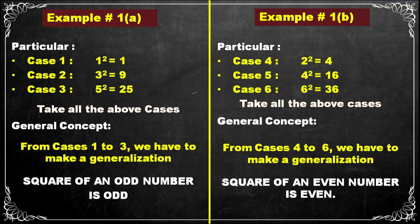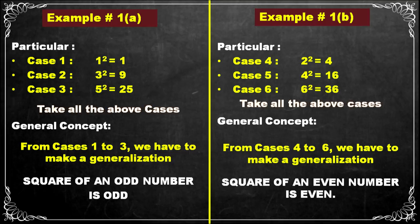In the same way, consider cases four, five, and six. Case four: 2² = 4. Case five: 4² = 16. Case six: 6² = 36. These are particular examples. Here, 2, 4, 6 are even numbers. Squaring these numbers, we get an even number again. So from cases four to six, we make a generalization: the square of an even number is even.